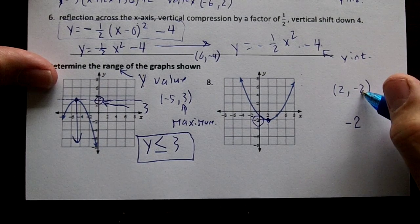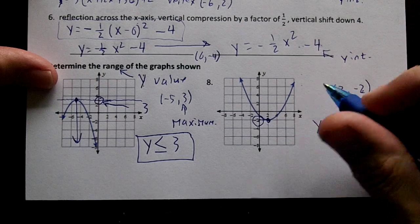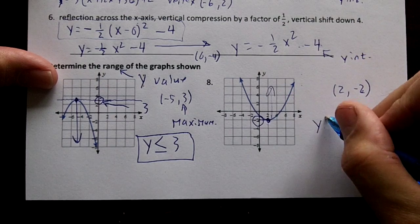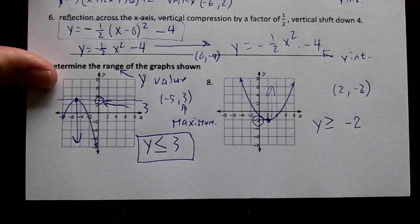This right here tells us our range. Why? And notice it goes up, doesn't it? So it's going to be greater than or equal to negative two.